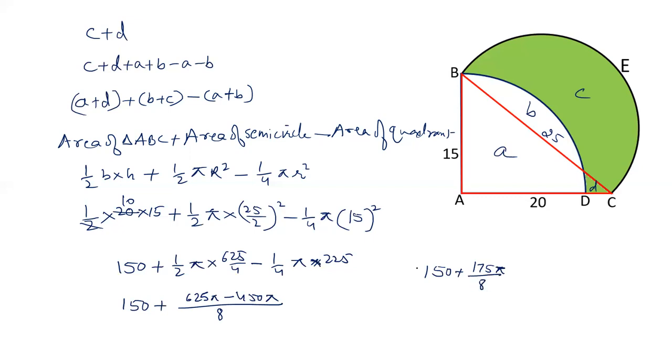This is the area of green region. If you want to put the value of pi, that will be 175 by 8, 22 by 7. 7 2s are 14. 7 5s are. 2 4s are. 2 11s are.